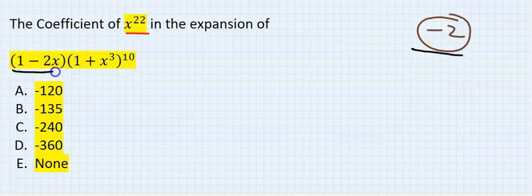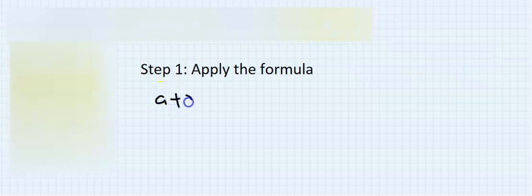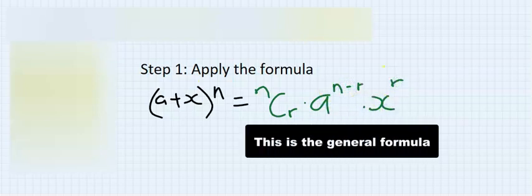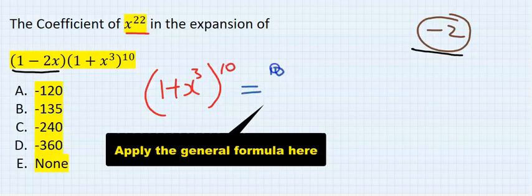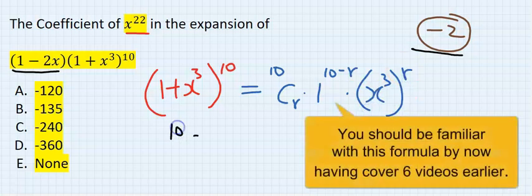So I'm going to solve for (1 plus x to the power of 3) all to the power of 10. Step number one: apply the formula (a plus x) to the power of n, which gives us n combination r times a to the power of n minus r times x to the power of r. This becomes 10 combination r times 1 to the power of 10 minus r times x to the power of 3 to the power of r.